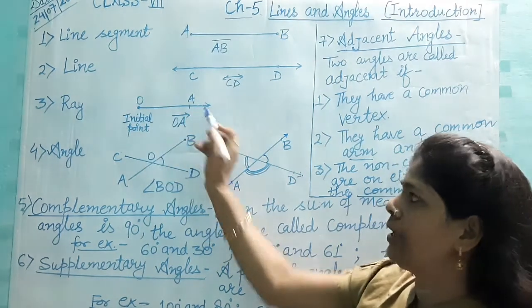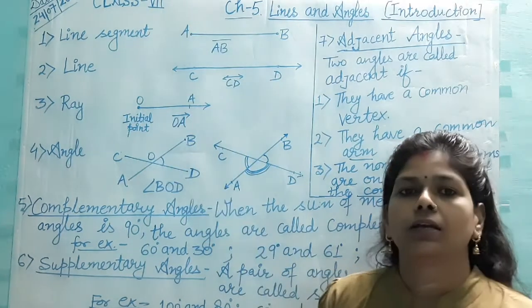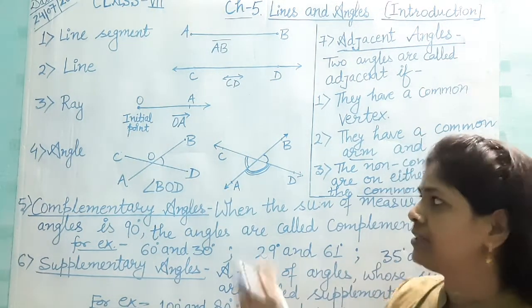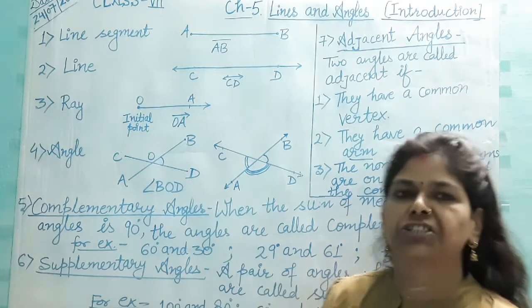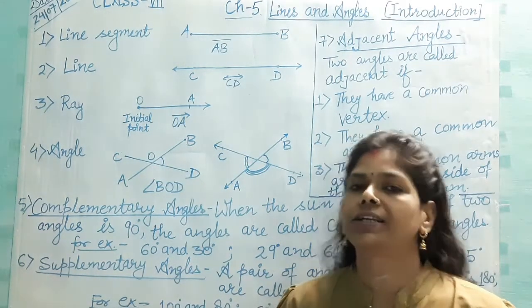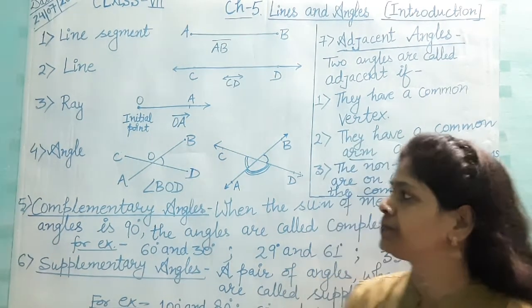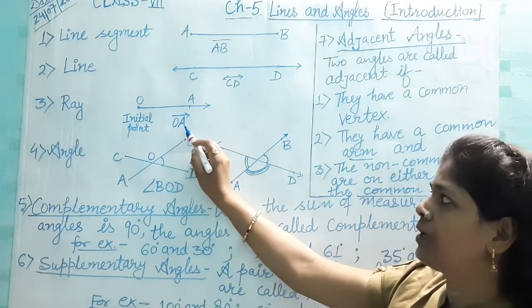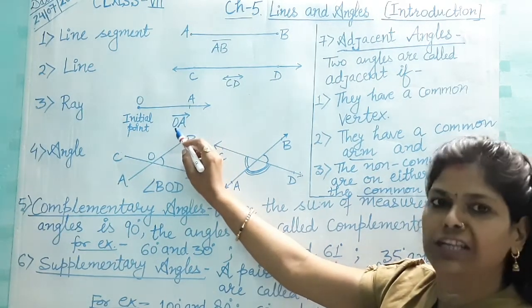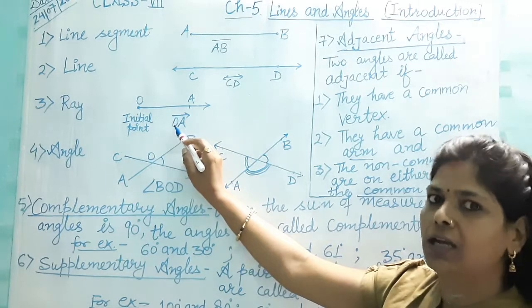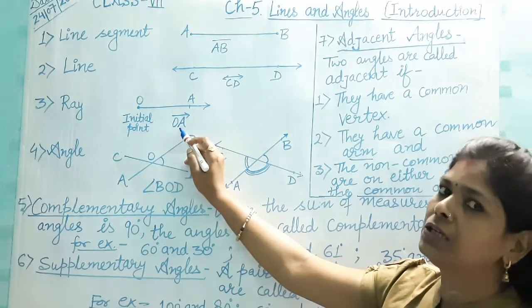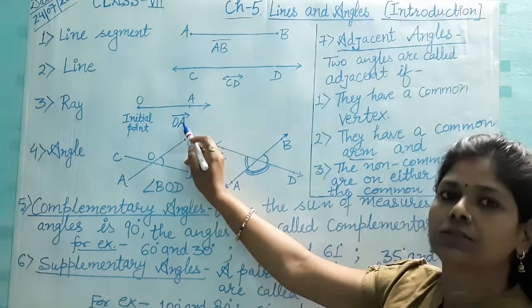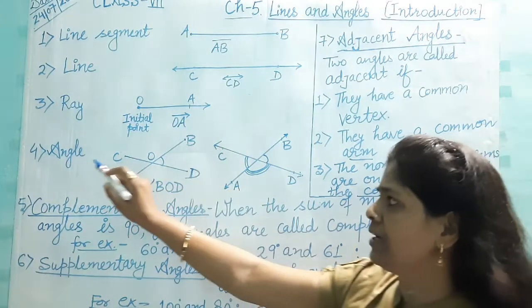Ray OA. A ray has one endpoint, which is also known as the initial point or starting point, and is represented as OA. First write the initial point or starting point, and then the producing point. OA is a ray.